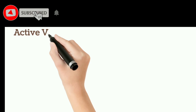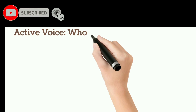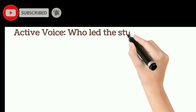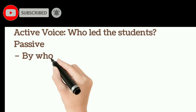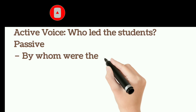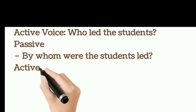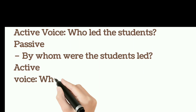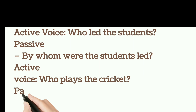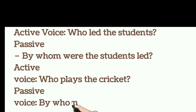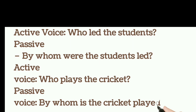Active voice: who led the students. Passive: by whom were the students led. Active voice: who plays the cricket. Passive voice: by whom is the cricket played.